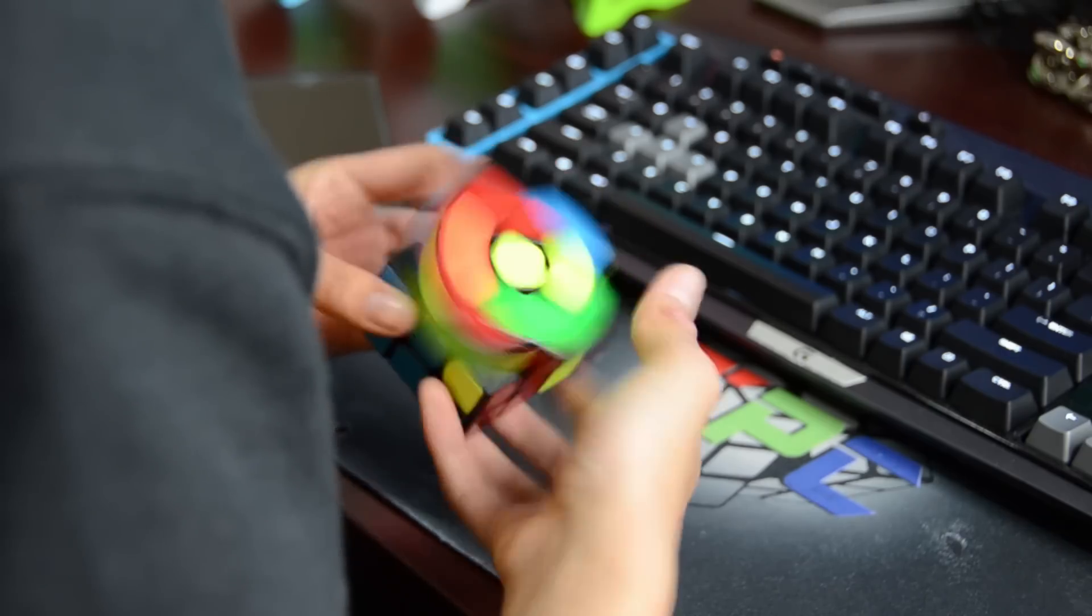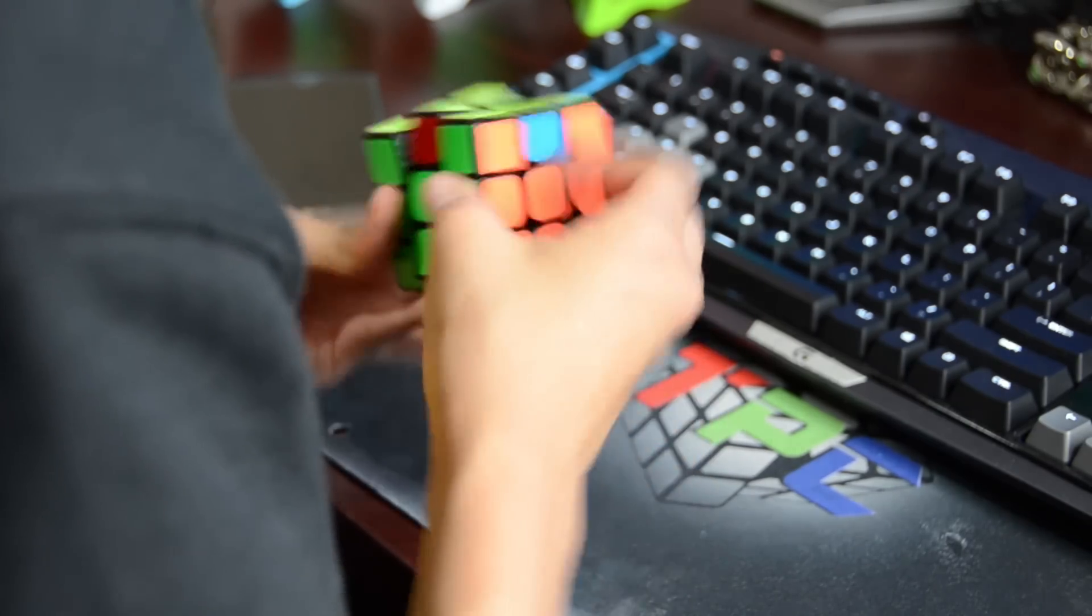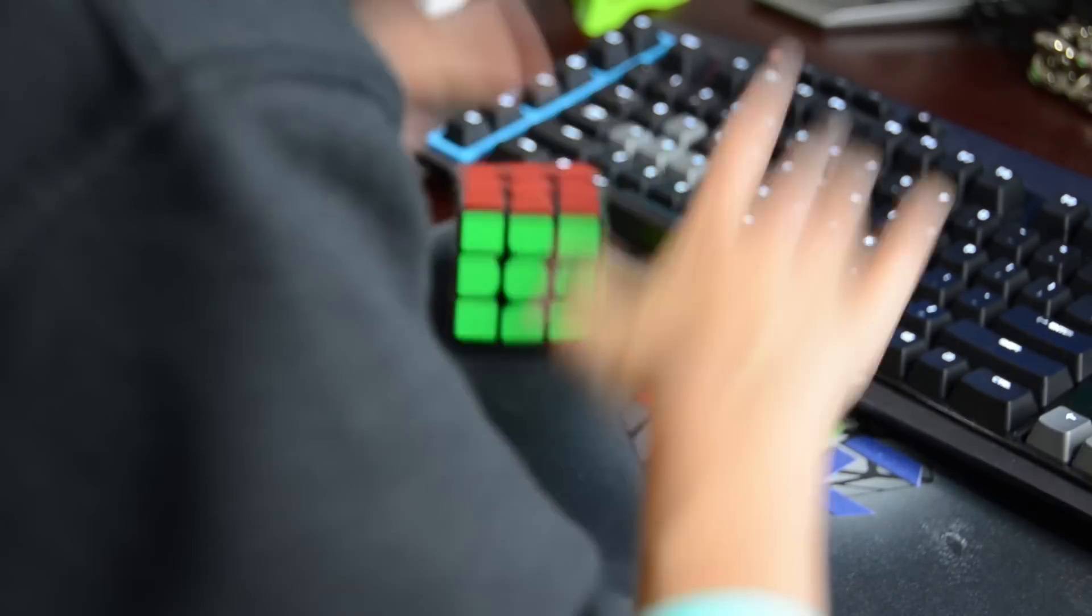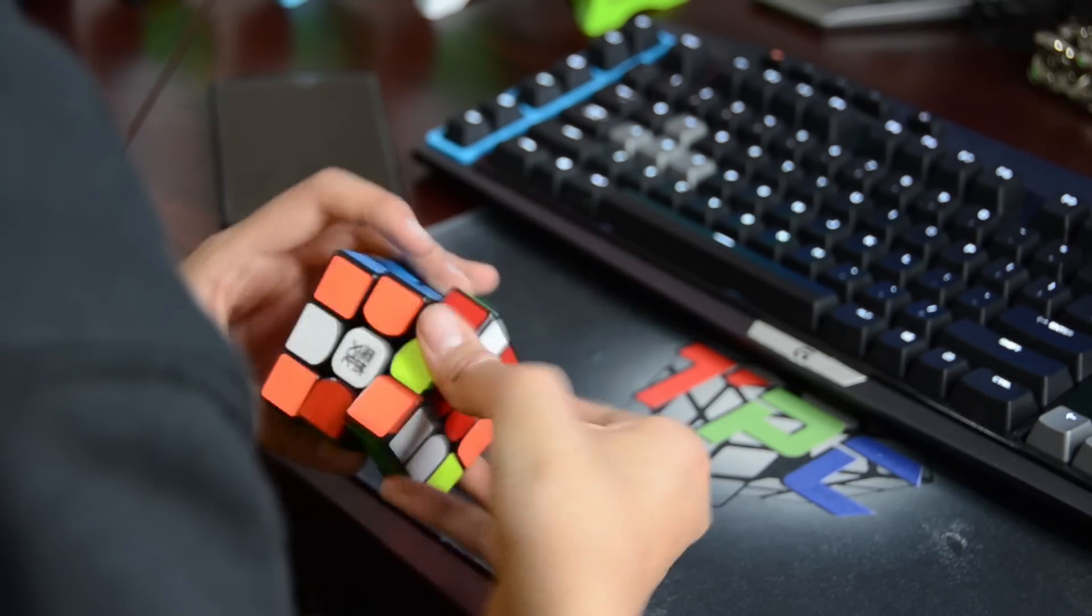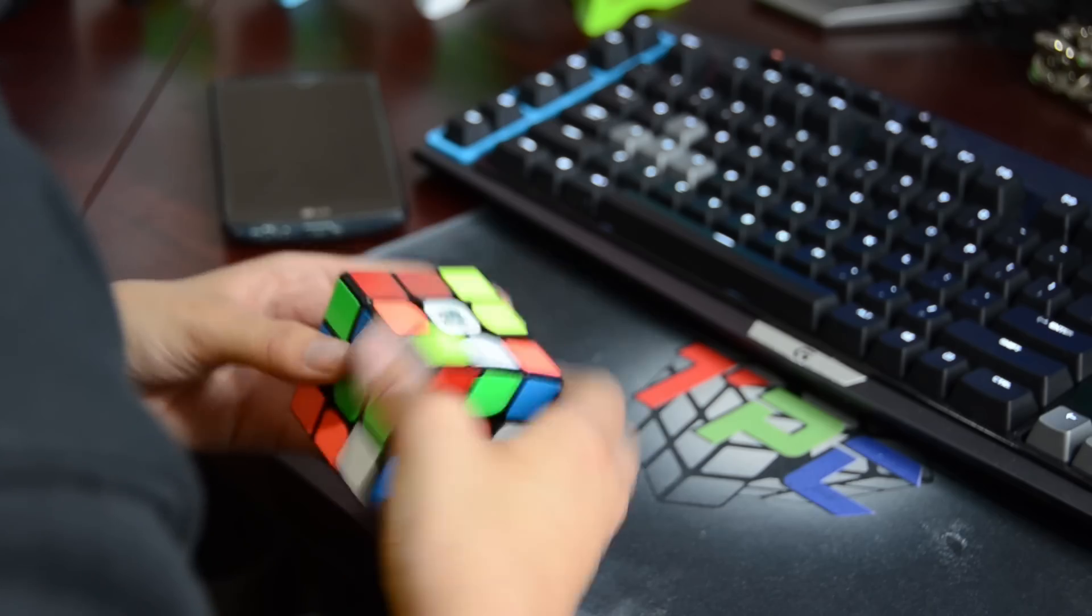But, since you guys are the reason I am successful on this channel at all, I have something special for you. You can now use discount code TPC at checkout on the cubicle for 5% off your entire order. While you're there, be sure to check out my Cuber profile for a lot of info on me.